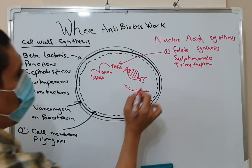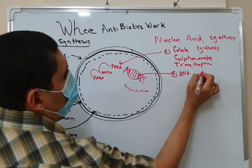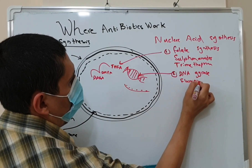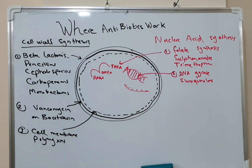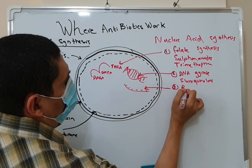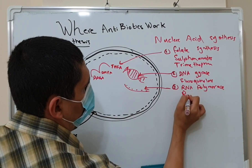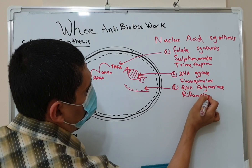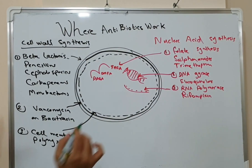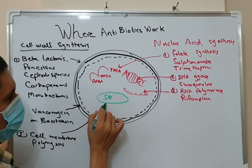The second group works on DNA gyrase, such as the fluoroquinolone group, which includes ciprofloxacin, levofloxacin, gatifloxacin, and other fluoroquinolones. The third type works on RNA polymerase, and this includes the anti-TB antibiotic rifampicin.